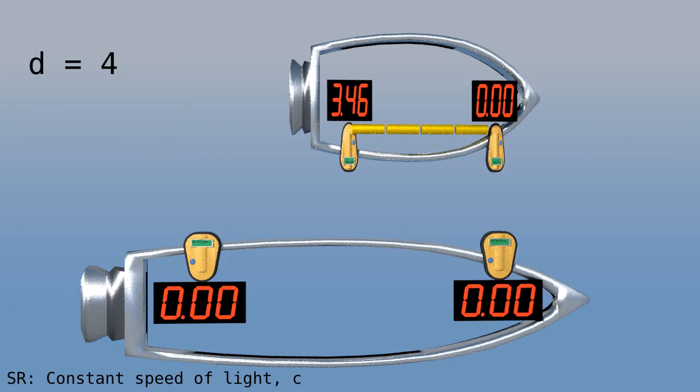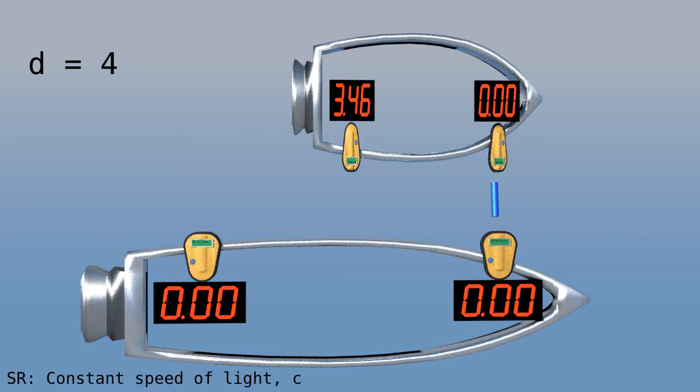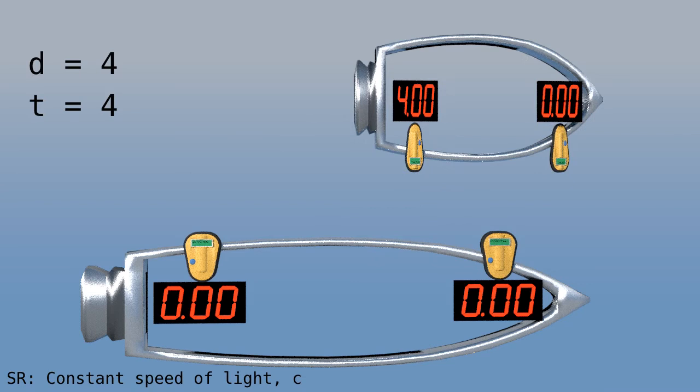When the firecracker explodes, the nearby clock shows 0. The one behind shows 3.46. The flash travels toward the second detector and the clocks advance at half speed. The detector gets the light flash when its clock reads 4. So again, we get 4 divided by 4, which is 1. The same value for the speed of light. Amazing! All this messed up equipment is messed up in just the right way. The three phenomena conspire to make sure that everyone measures the same speed of light.